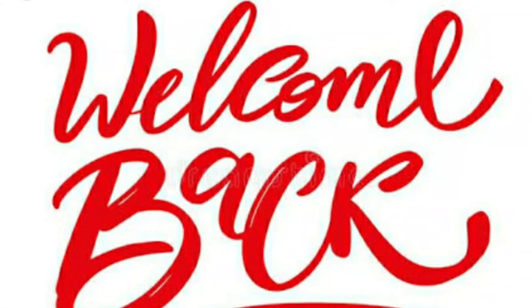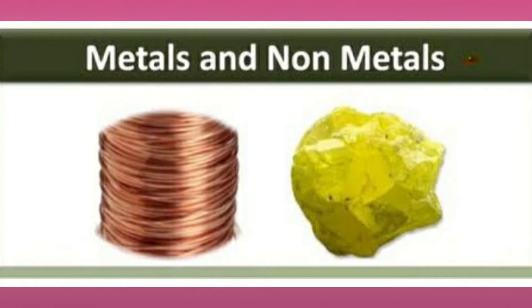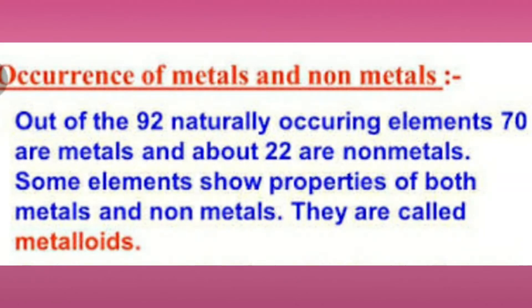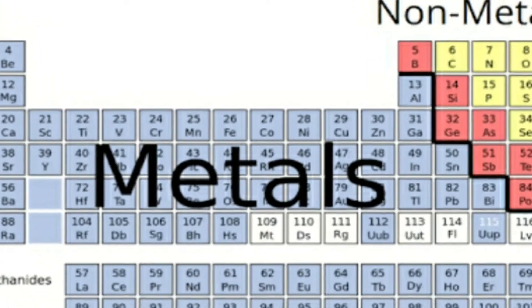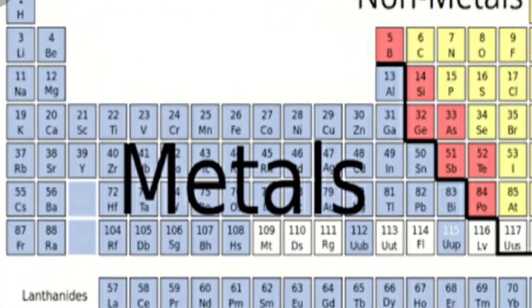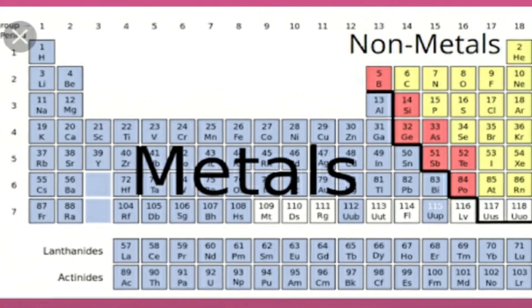In this video I am going to explain about the occurrence of metals from the lesson metals and non-metals. Before starting the concept of occurrence of metals, let us see how metals and non-metals occur in nature. Out of 92 naturally occurring elements, 70 are metals and about 22 are non-metals.